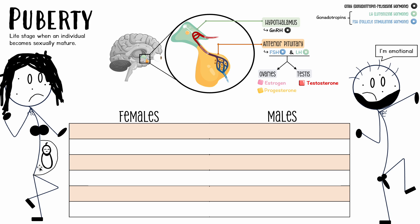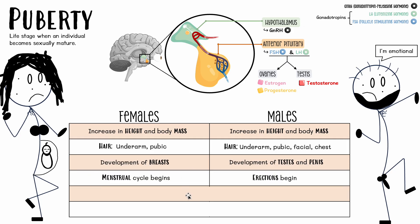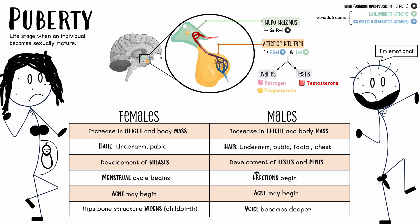Of course, females also have the same issues as males — we get emotional and we have a sex drive. These are the key things you guys should know. Obviously there are other things, but these are the main ones you should be concerned about for the IB. And remember, all of these changes are thanks to testosterone in males and estrogen and progesterone in females.